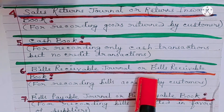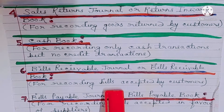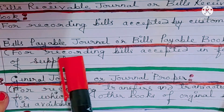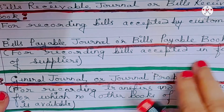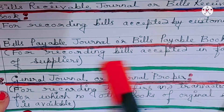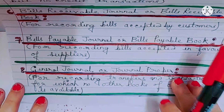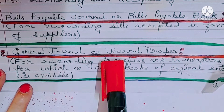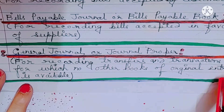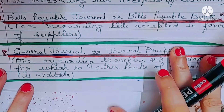Number six: bills receivable journal or bills receivable book, which only records bills accepted by customers. Number seven: bills payable journal or bills payable book, which only records bills accepted in favor of suppliers. When we study bills of exchange, we will understand more.